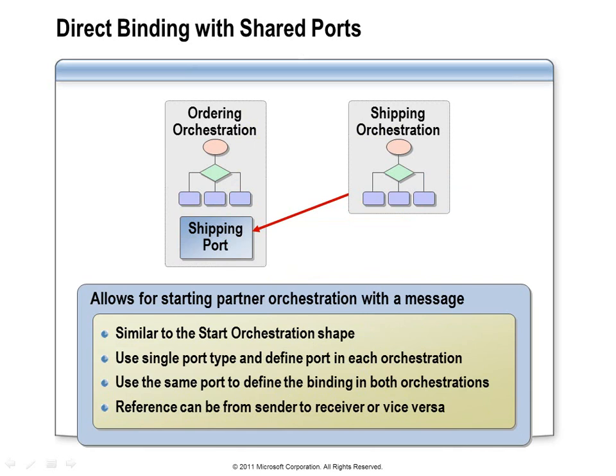The third direct binding option makes use of shared ports, also known as partner ports. This option fully encapsulates the details of the direct binding and handles all details related to subscriptions and any correlation involved. With this option, you declare up front, as you're creating the direct bound port, which two orchestrations will be sharing it. The shared port will appear as a receive port in one orchestration and as a send port in the other. Since the connection between these orchestrations is established at design time, it would require recompilation if you were to make any modifications.